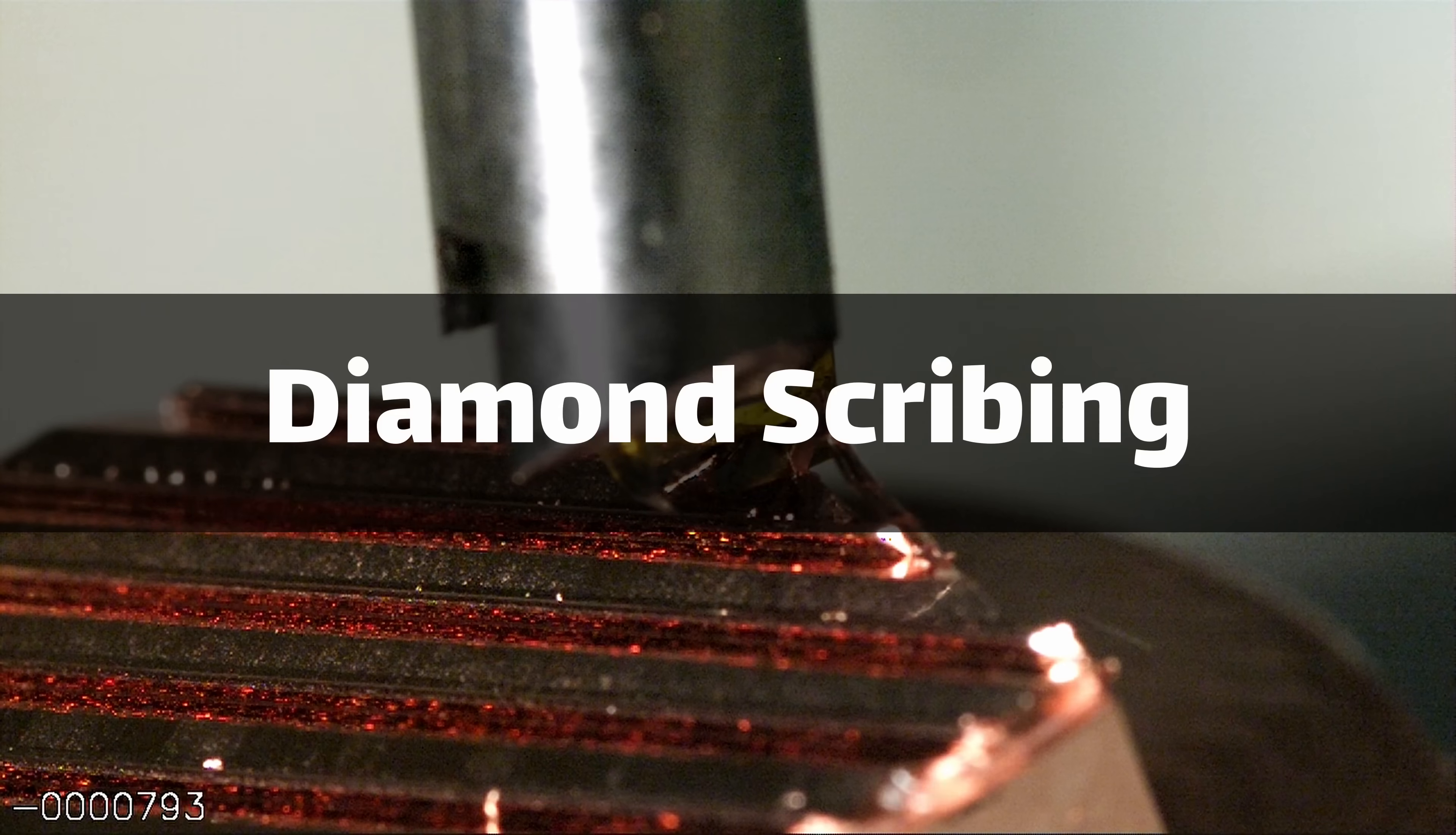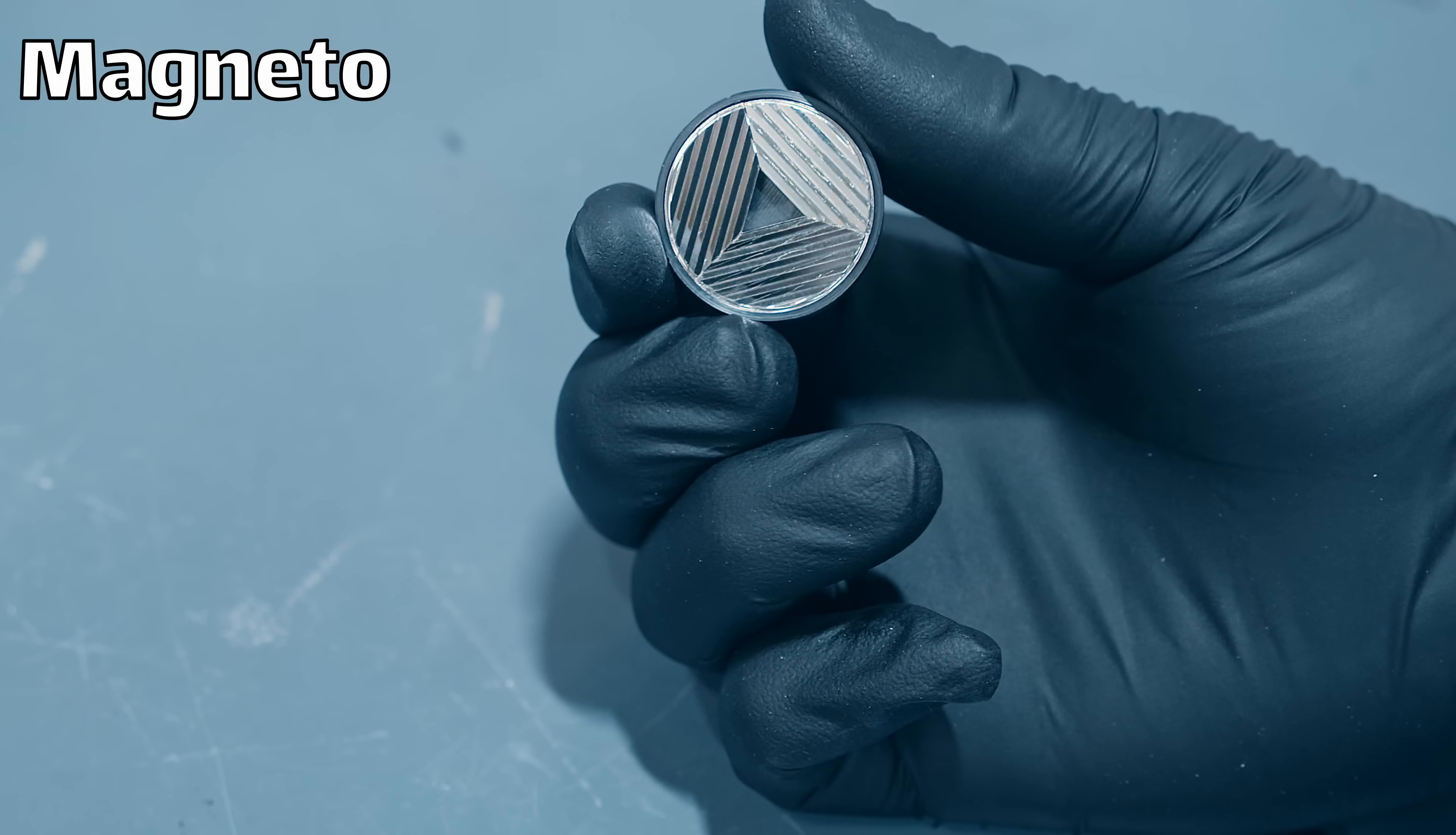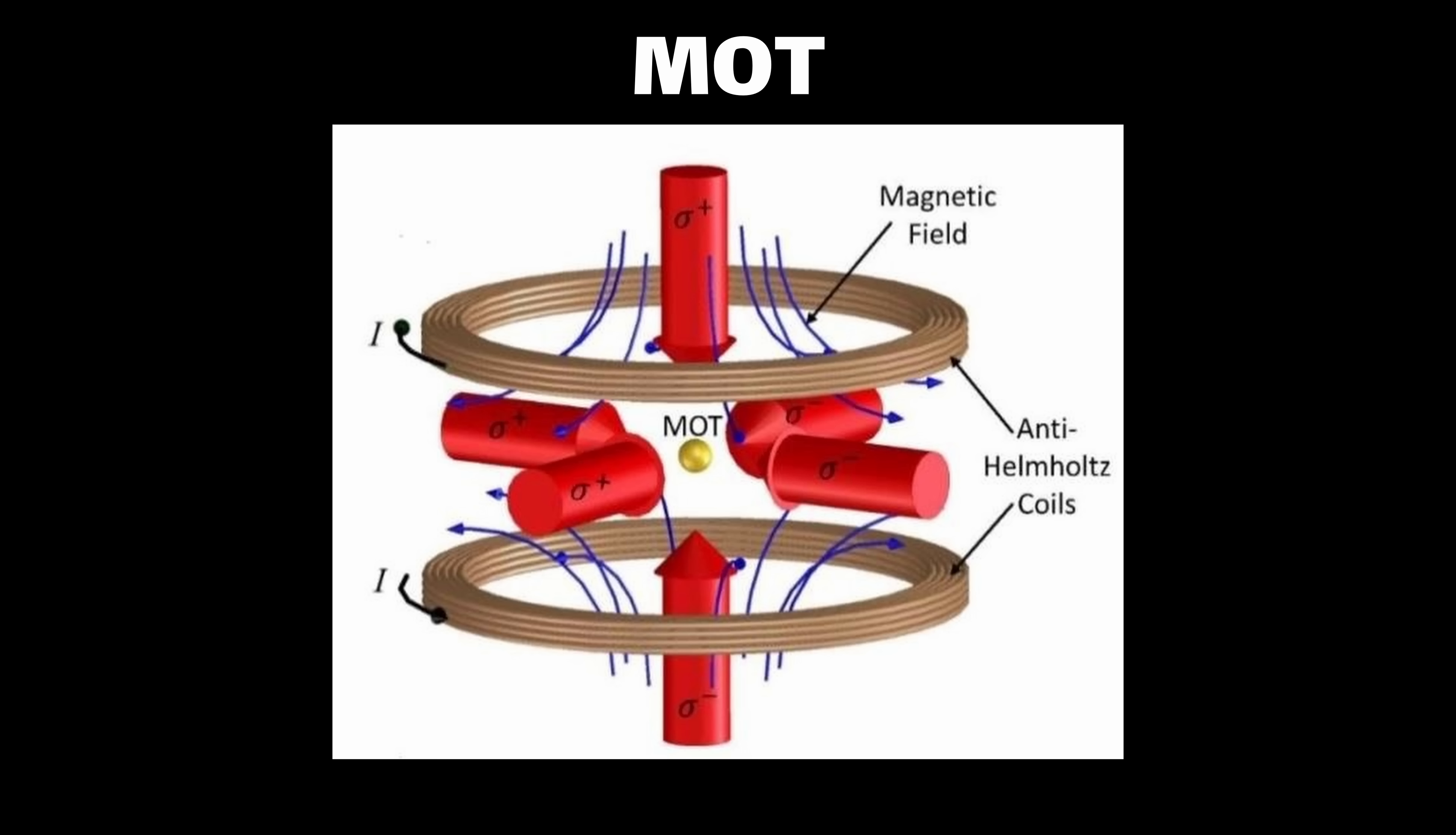This process is known as diamond scribing, and today we're going to create an optical mirror for a quantum device called a magneto-optical trap, or MOT for short.